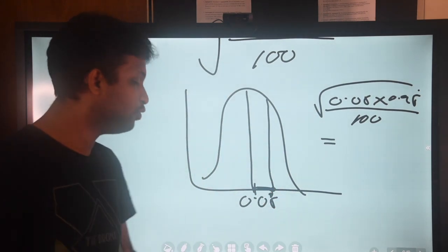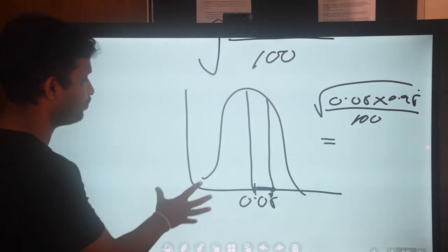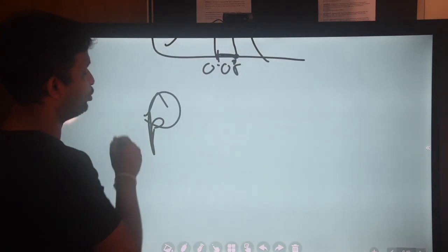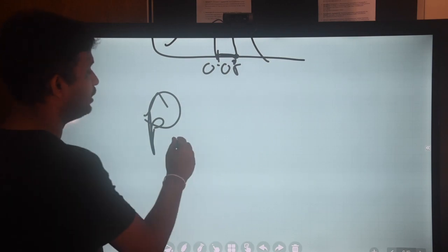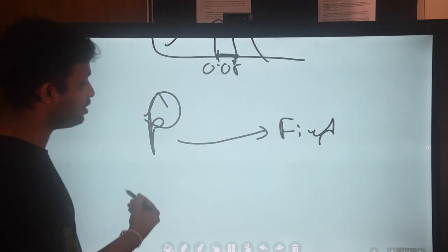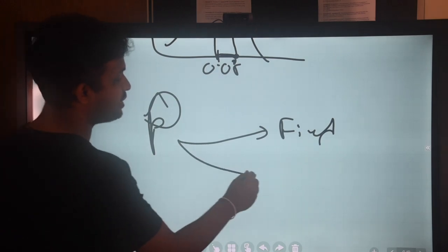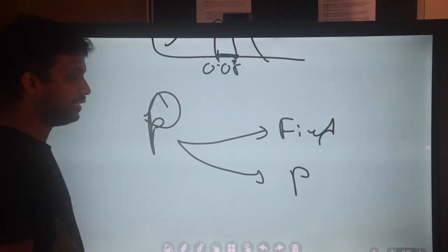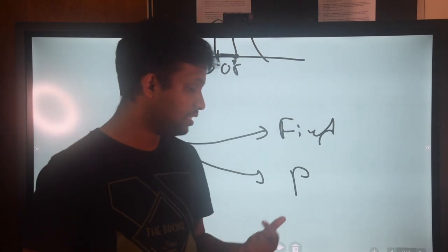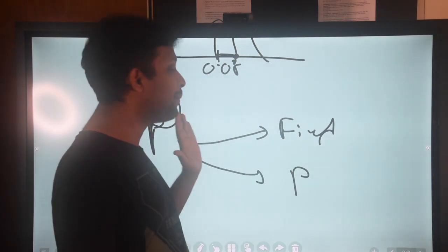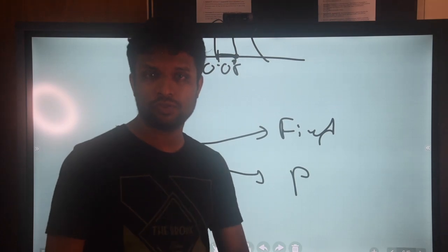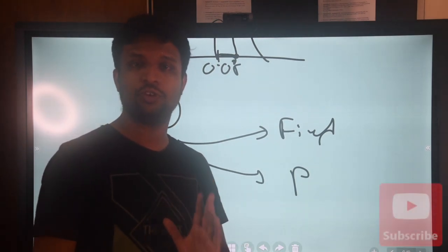I hope you are clear about making the sampling distribution. In the next few lectures, we will discuss how to compare a proportion P against a fixed value, against another proportion, and other cases. Remember that unlike means, there are several methods to compare proportions, and we will discuss them one by one. Thank you very much.